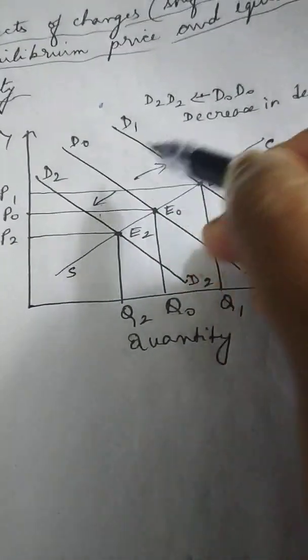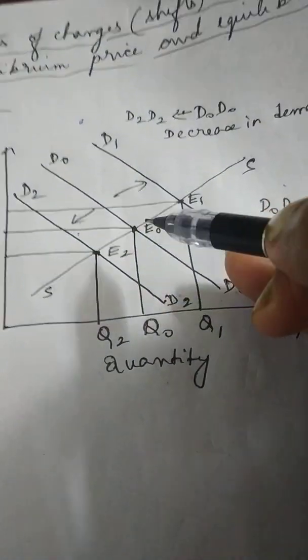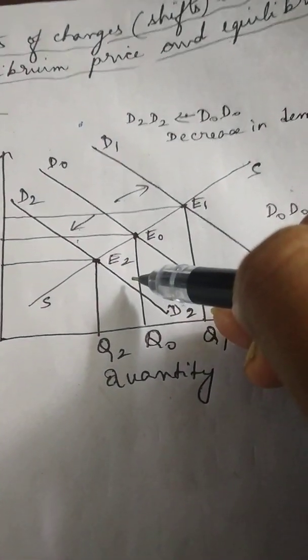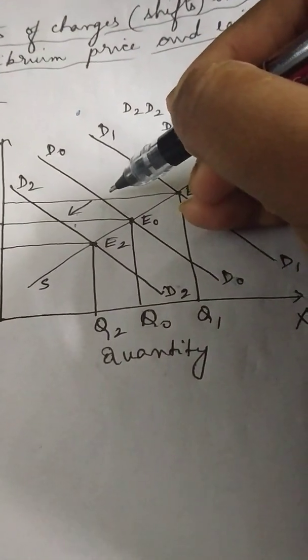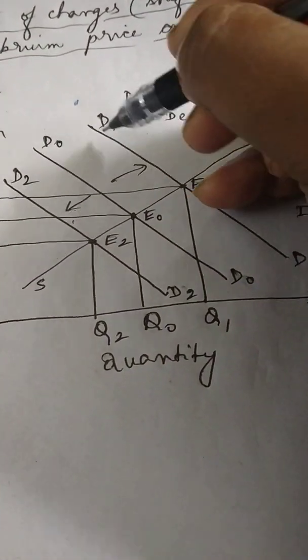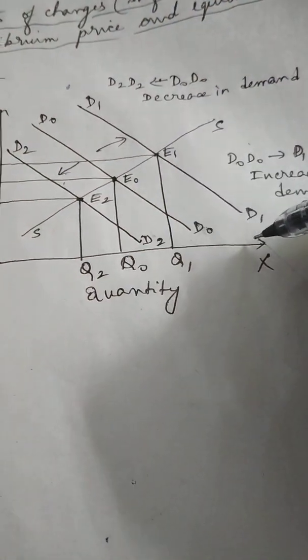Suppose demand increases due to some reason — say income of the consumer increases. Demand increases means there will be a rightward shift of the demand curve to D1, D1.